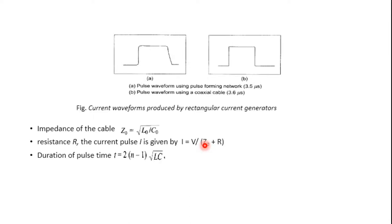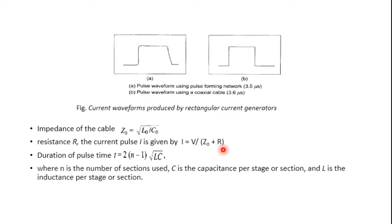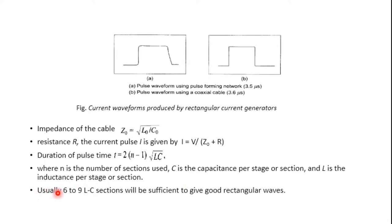When using an artificial transmission line, the duration of the pulse time is given as t = 2(n−1)√(LC), where n is the number of sections used and L and C are the inductance and capacitance per section. Usually 6 to 9 LC sections are sufficient to give good rectangular waves.